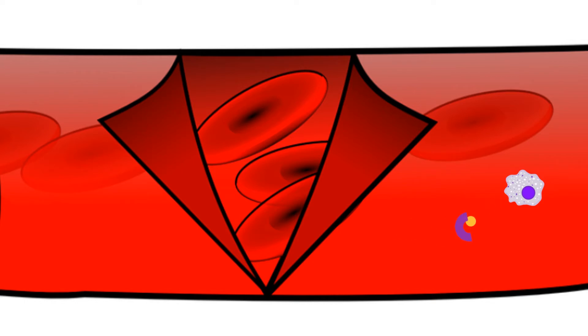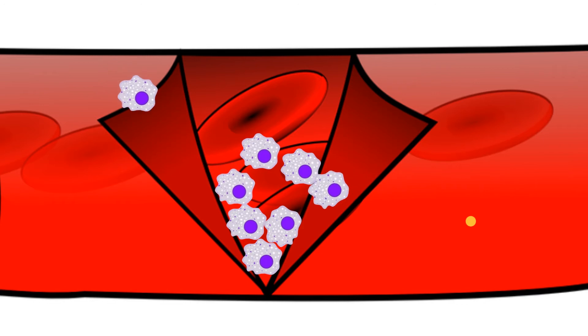Thromboplastin then converts prothrombin into thrombin. This makes the platelets thicker so they start to bind directly over the site of injury.